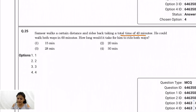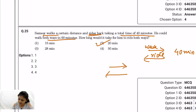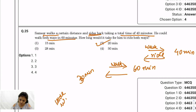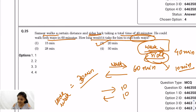Question 25: Sami walks a certain distance and rides back, taking a total of 40 minutes. He could walk both ways in 60 minutes. How long would it take to ride both ways? Walking one way = 30 minutes, riding one way = 40 − 30 = 10 minutes, so riding both ways = 20 minutes. The correct answer is option 2: 20 minutes.